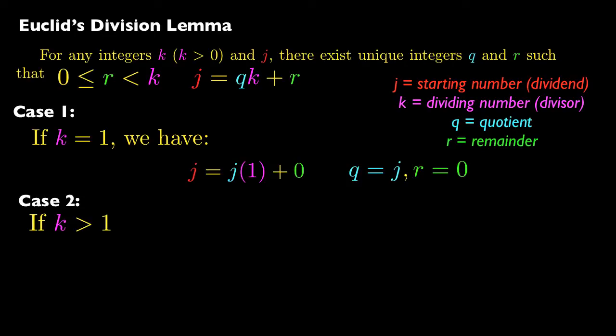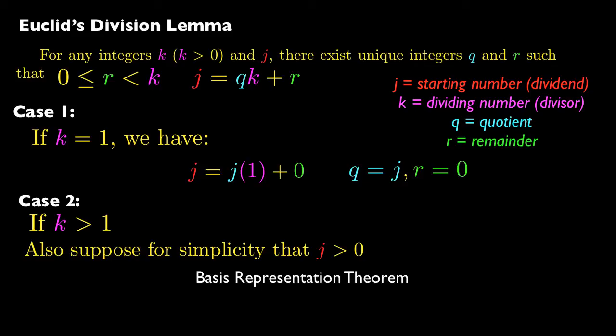So case 2 is, what if k is greater than 1? And also, for simplicity, in this proof, I'm not going to discuss when the starting number is negative. So assume that the starting number is going to be positive. It's not going to be negative or 0. It's not that difficult to prove this for when j is a negative number. But just for this video, I decided not to do it.